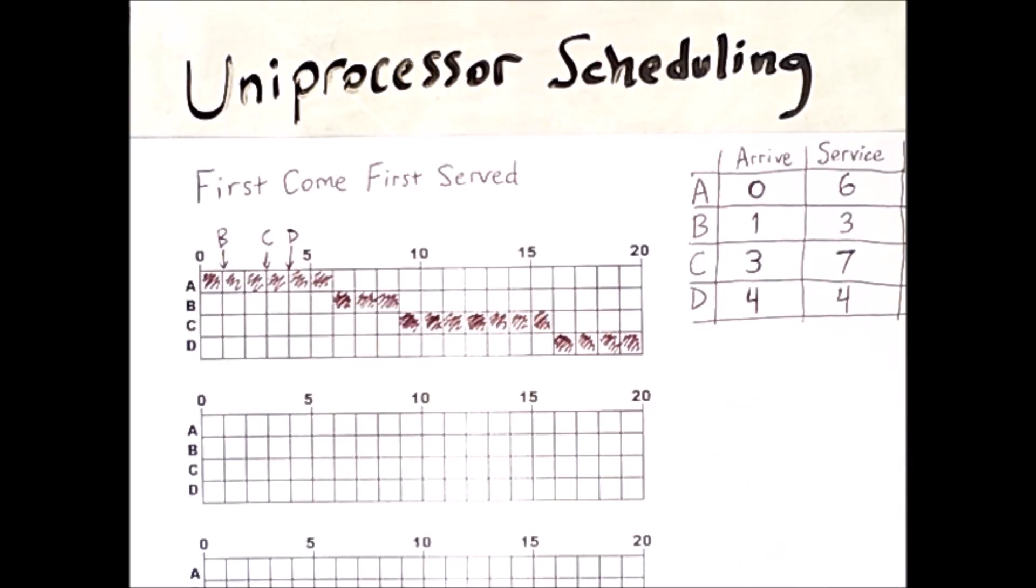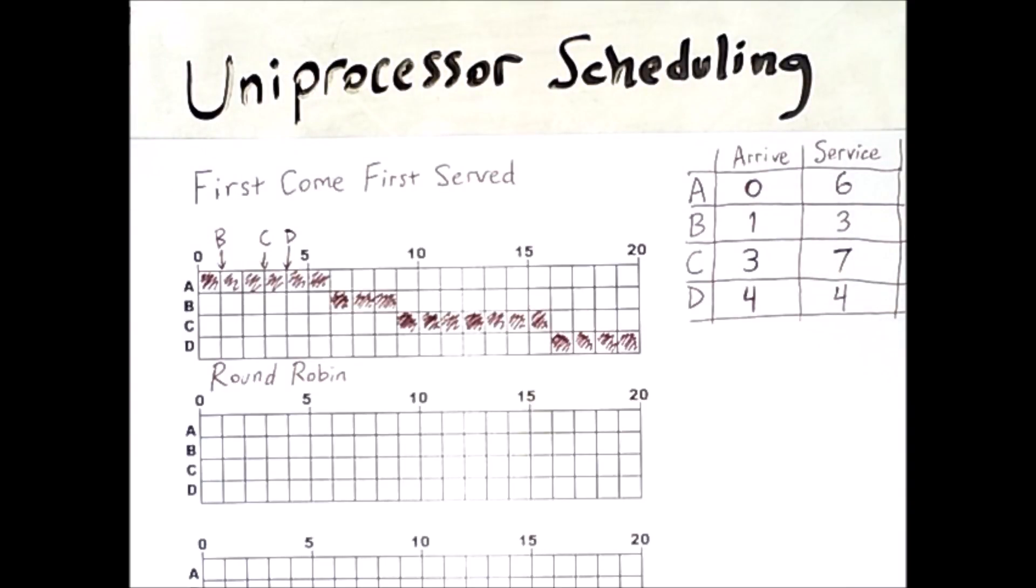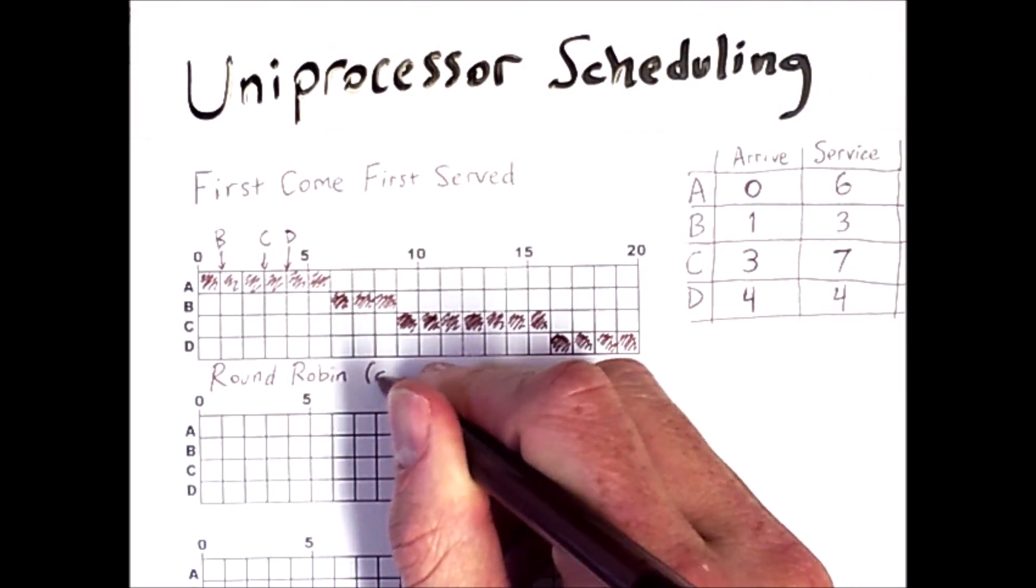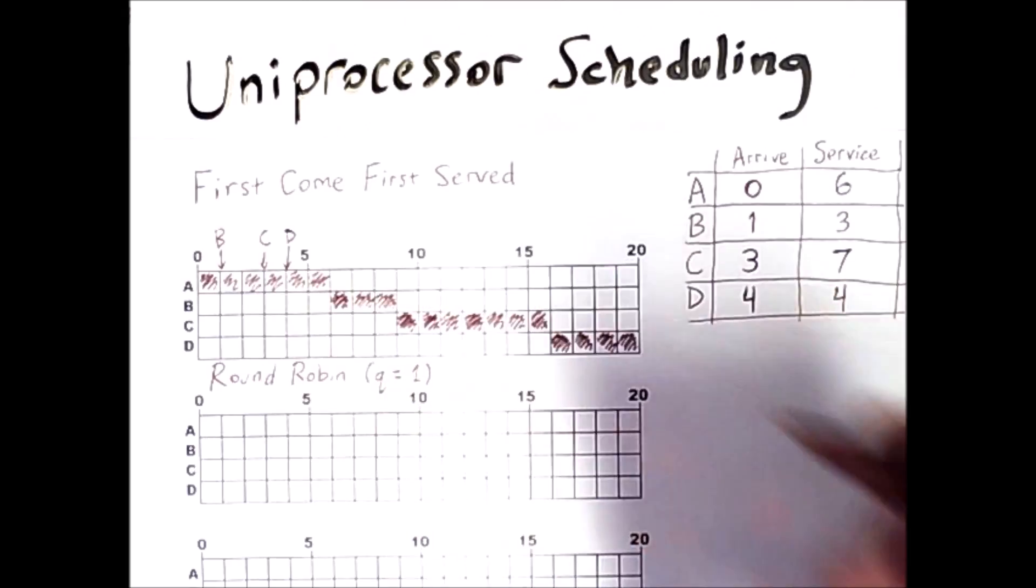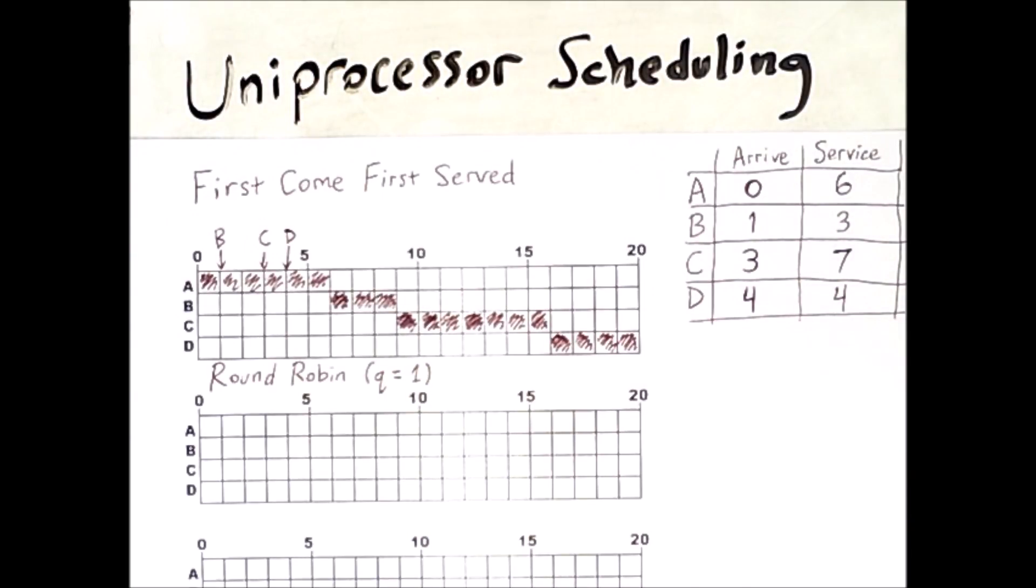So one approach that is capable of doing this is round-robin. Now whenever we think about round-robin scheduling we have to do it with respect to a particular quantum of time. So I'm going to use for this first example a quantum Q simply of one. So what this means is that any given process can run for exactly one unit of time before being kicked off in favor of other processes in the waiting queue currently.